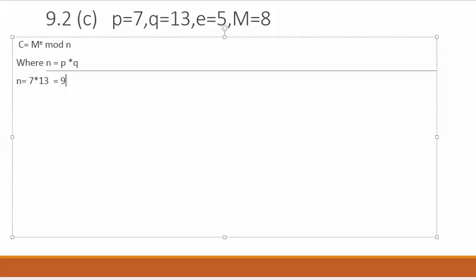So n = 7 multiplied by 13, which is equal to 91. Now we are going to put these values in the previous equation, which is C = M^e mod n. M is 8 in this case and the value of e is 5 mod 91.